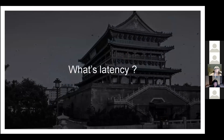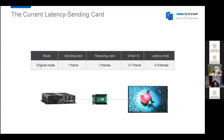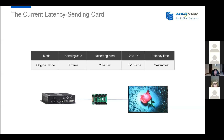From those two cases we can see there is some delay happening during video transmission. But what causes latency? From the standard LED control system, the whole structure is: video source goes to the sending card, the sending card transmits data to the receiving card, and then to the LED modules. Every step needs some time to process data — like decoding, encoding, and transmitting — and those times are latency.